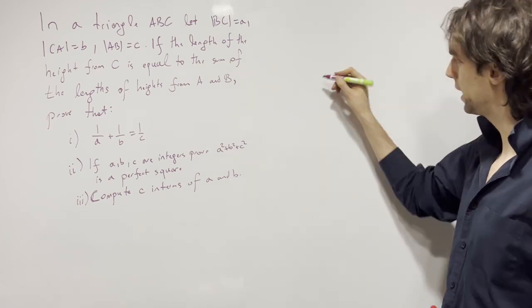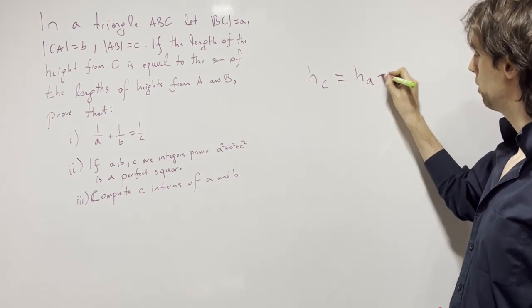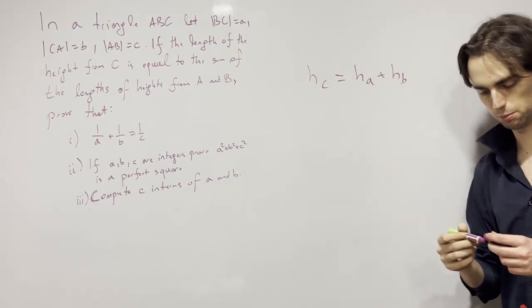So let's say the height of C is called h_C, and this is equal to h_A plus h_B, the height from A from height from B.